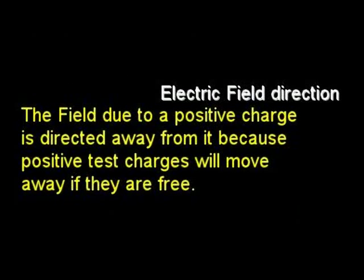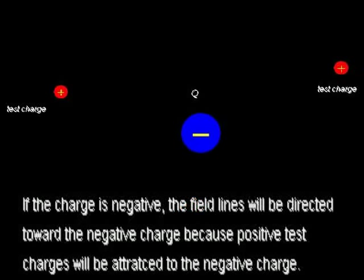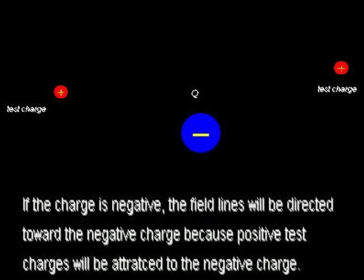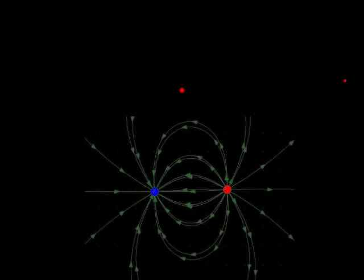Electric field direction: the field due to a positive charge is directed away from it, because positive test charges will move away if they are free. If the charge producing the field is negative, then the field lines will be directed toward the negative charge.